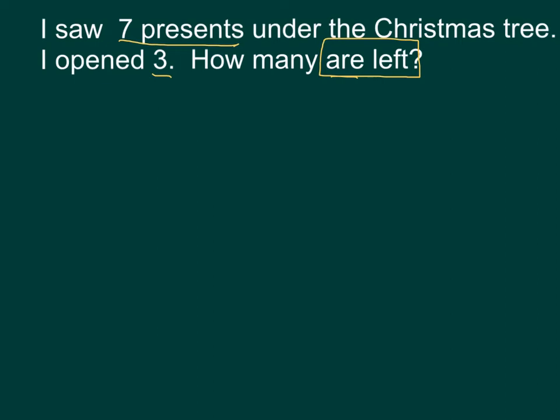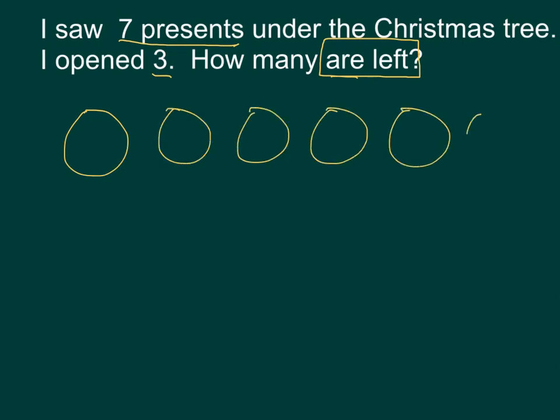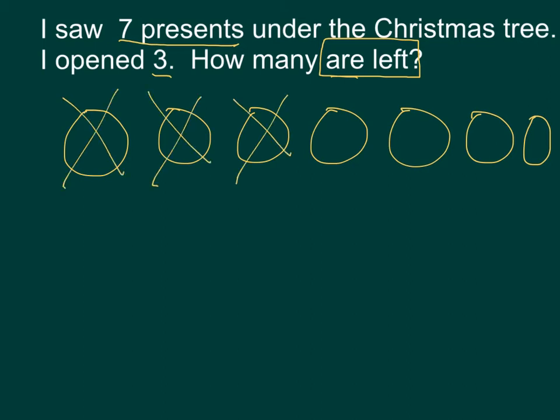Alright, let's check your work. It says I saw seven presents under the Christmas tree, so I'm going to draw my seven presents — one through seven. And I open three of them. When I'm opening the presents, they're open, so I'm taking them away. That's why I crossed off three of them.